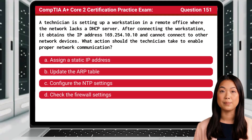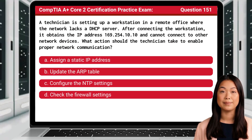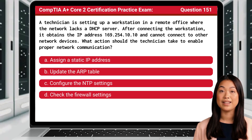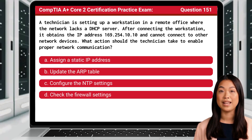Question 151. A technician is setting up a workstation in a remote office where the network lacks a DHCP server. After connecting the workstation, it obtains the IP address 169.254.10.10 and cannot connect to other network devices. What action should the technician take to enable proper network communication?